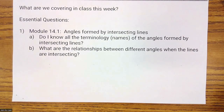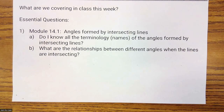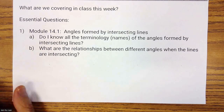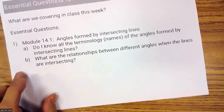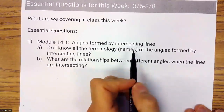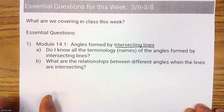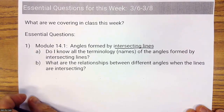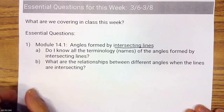This is Module 14.1 on Angles Formed by Intersecting Lines. Your essential question is: do I know all the terminology and the names of the angles formed by intersecting lines, and what are the relationships between the different angles when the lines are intersecting? We're going to dive into those relationships.